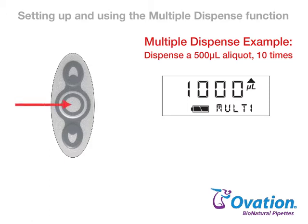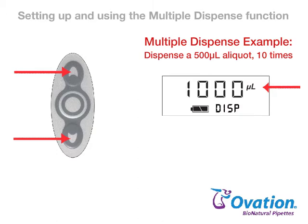Press and release the center button until Multi appears on the display, then press the up or down arrow and the current volume setting for individual dispenses is shown. Press the up or down arrow again to change the volume to the desired setting.